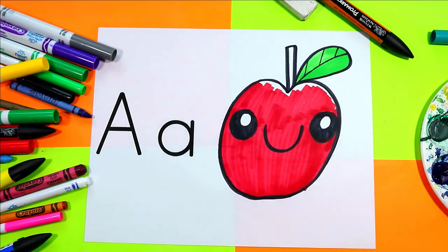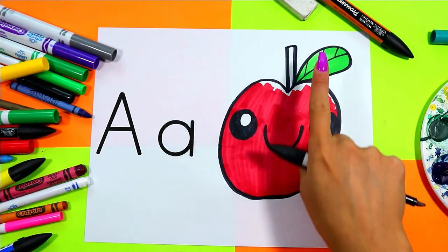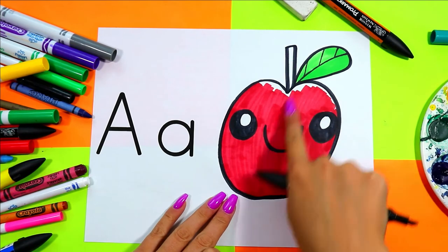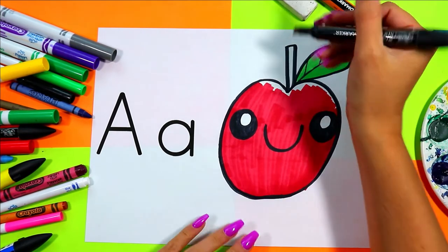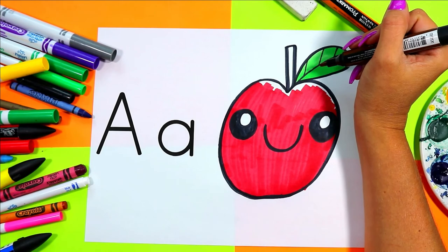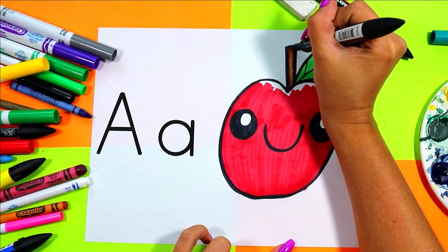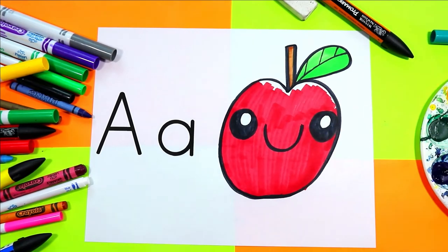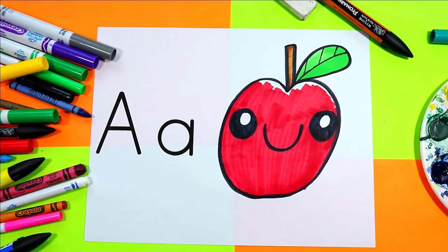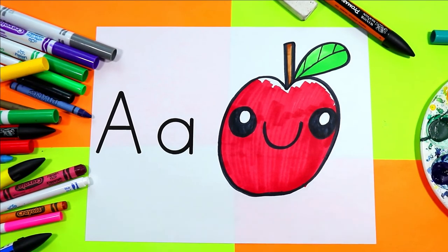And often when we look outside, we can see that tree stems and branches and even the stems on our little apple friends are all brown. So we can find a lovely brown to color in the stem of our wonderful little apple.